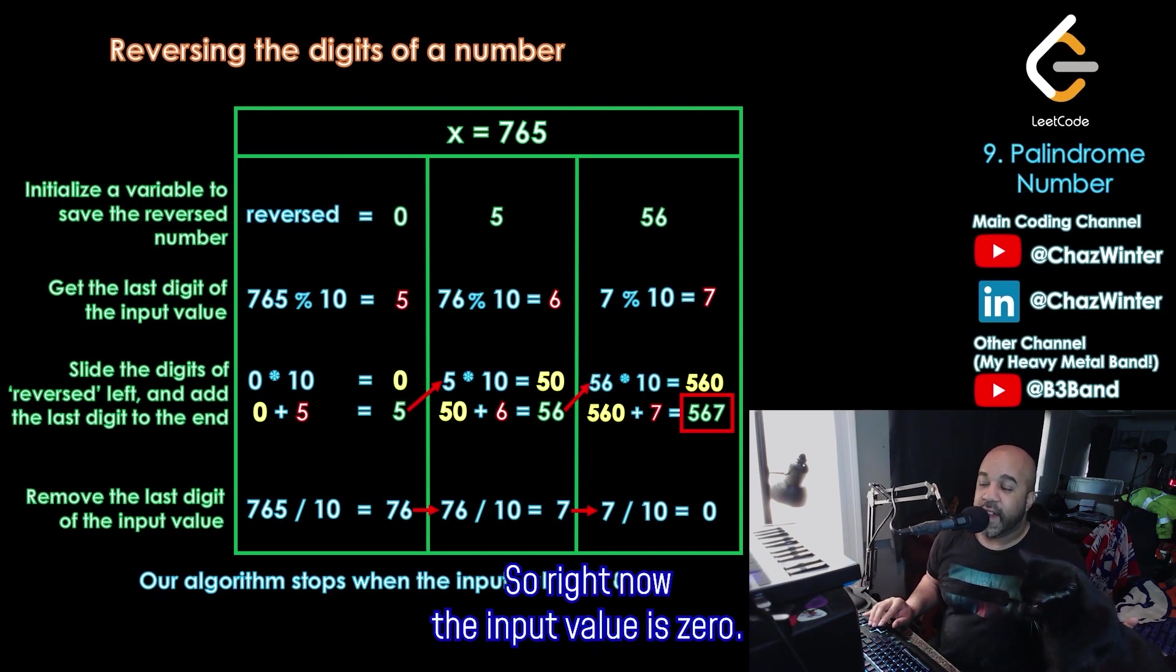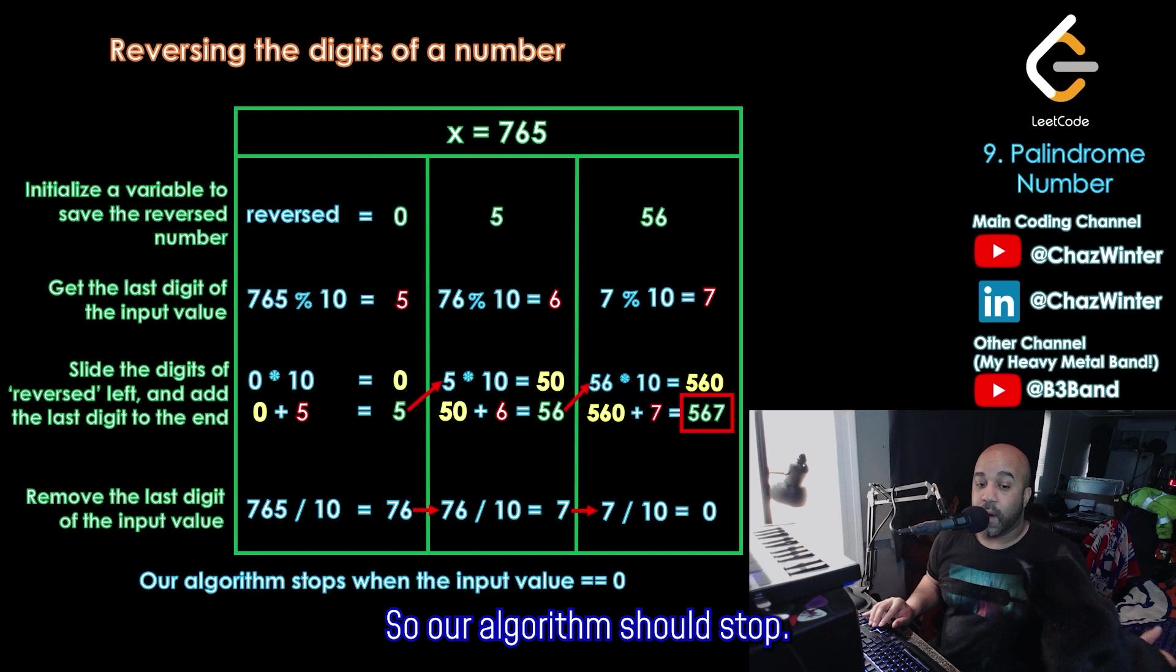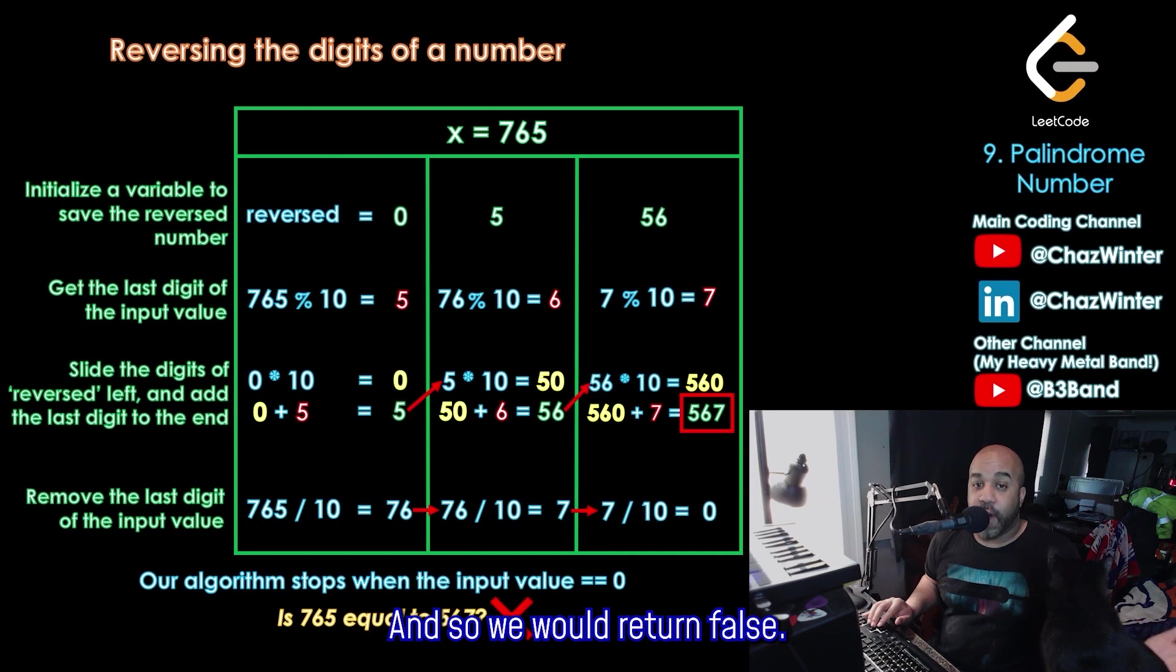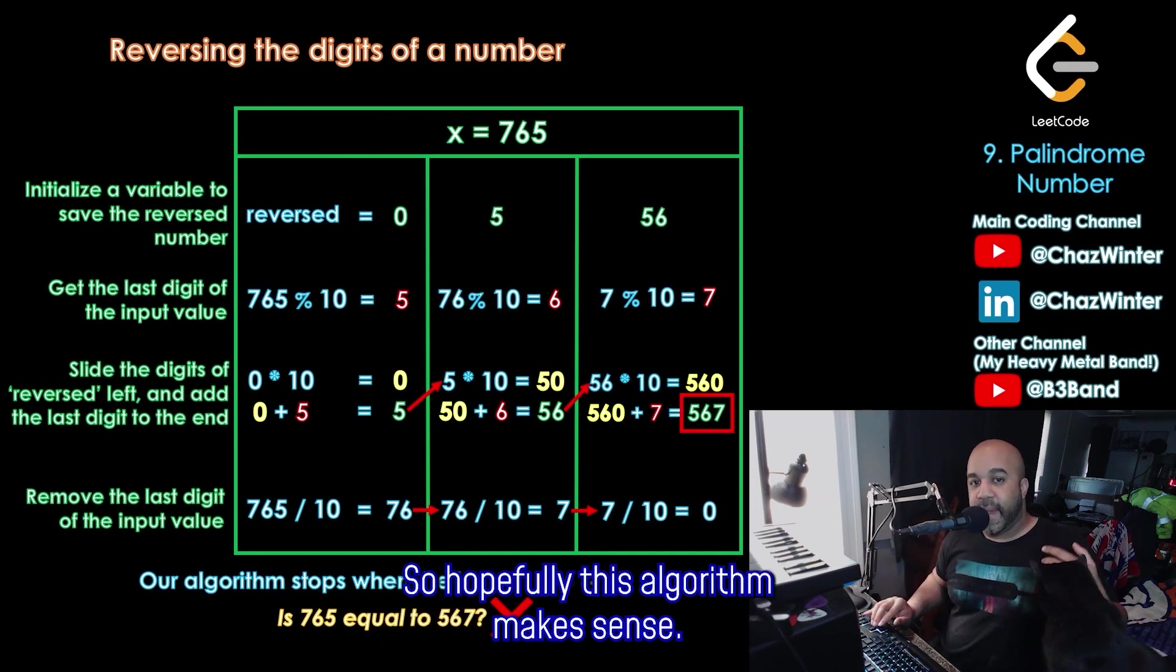We're going to set this up when we code it so that our algorithm stops when the input value becomes 0. So right now the input value is 0. So our algorithm should stop. And then all we have to do at this point is ask, is 765 equal to 567? The answer to that is no. And so we would return false. So hopefully this algorithm makes sense.